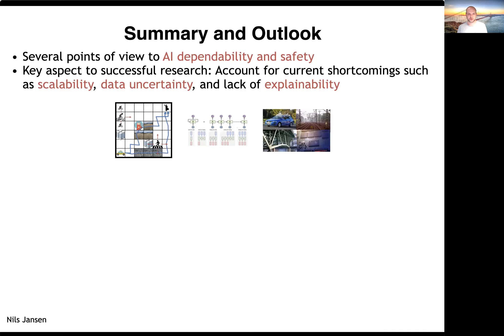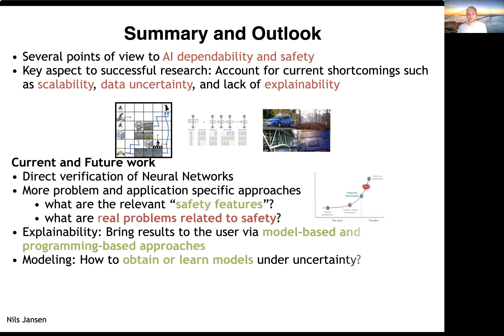In summary, we have several points of view on AI dependability and safety. The key aspect is to account for current shortcomings: scalability, data uncertainty, and lack of explainability, and then develop approaches that address these. Future and current work includes direct verification of neural networks, classifier ensembles for control problems, and more problem-specific approaches. I'm also working on predictive maintenance and am curious about further applications from this workshop. A general problem I think is very important is how to actually obtain or learn models under uncertainty.